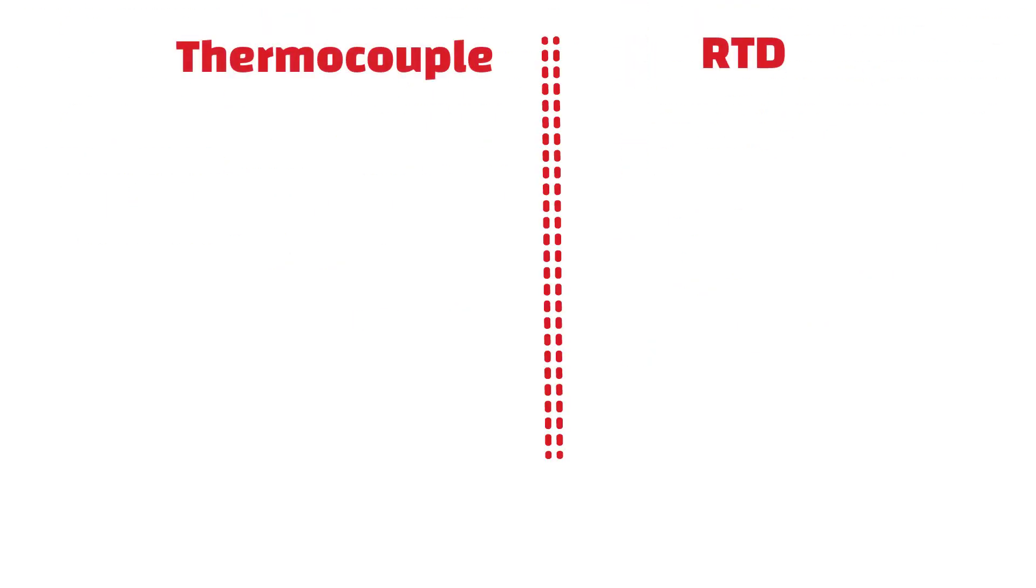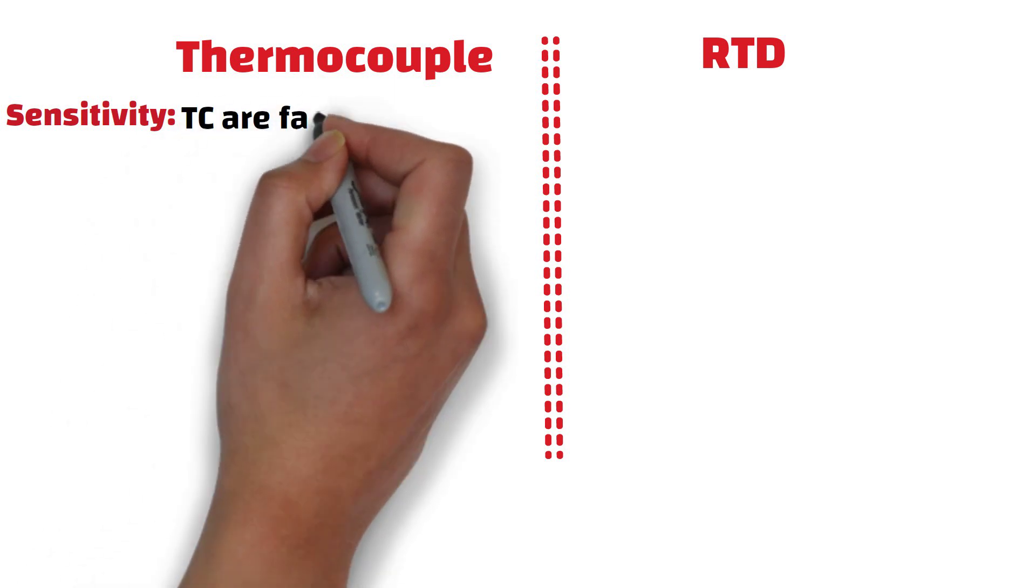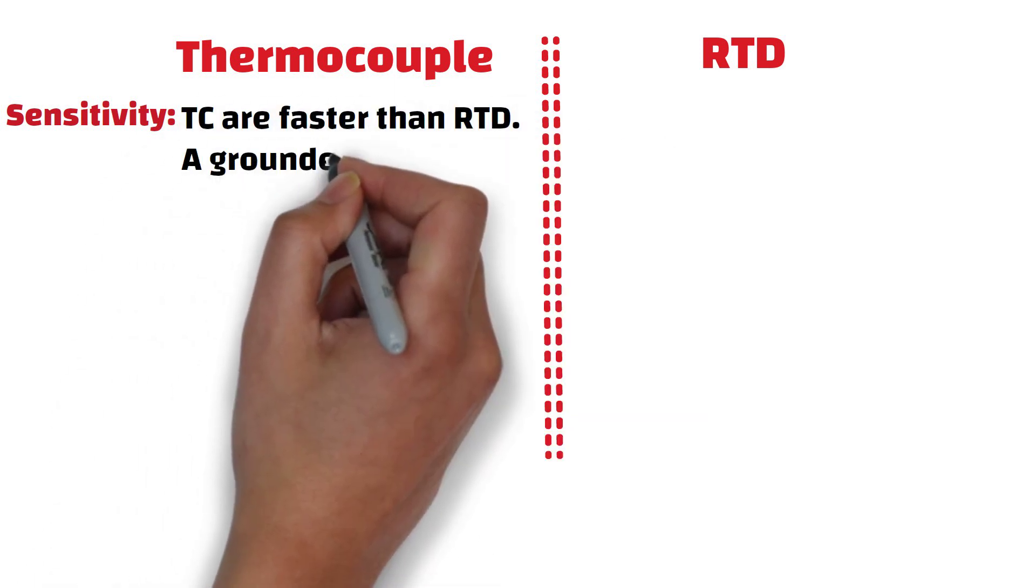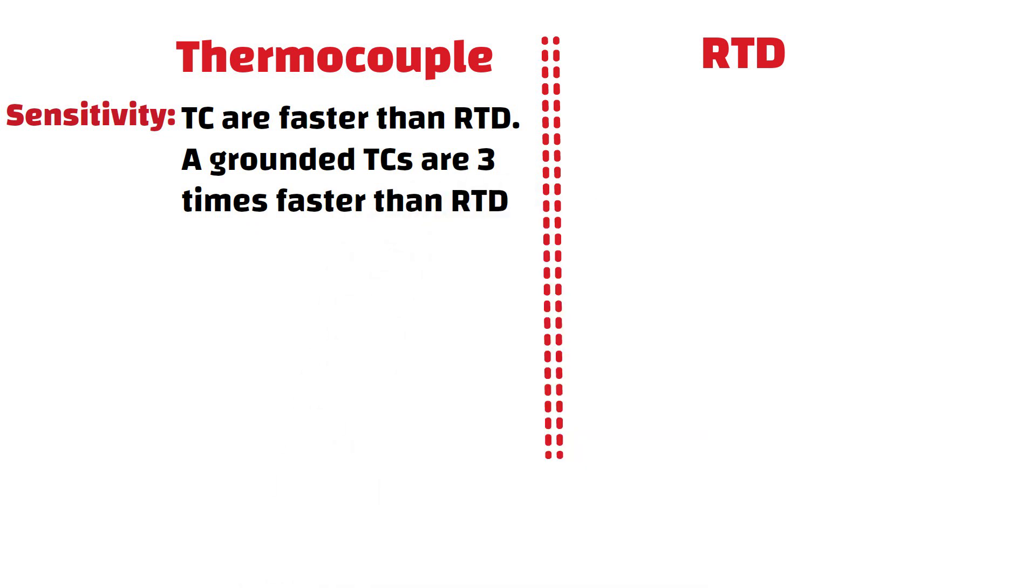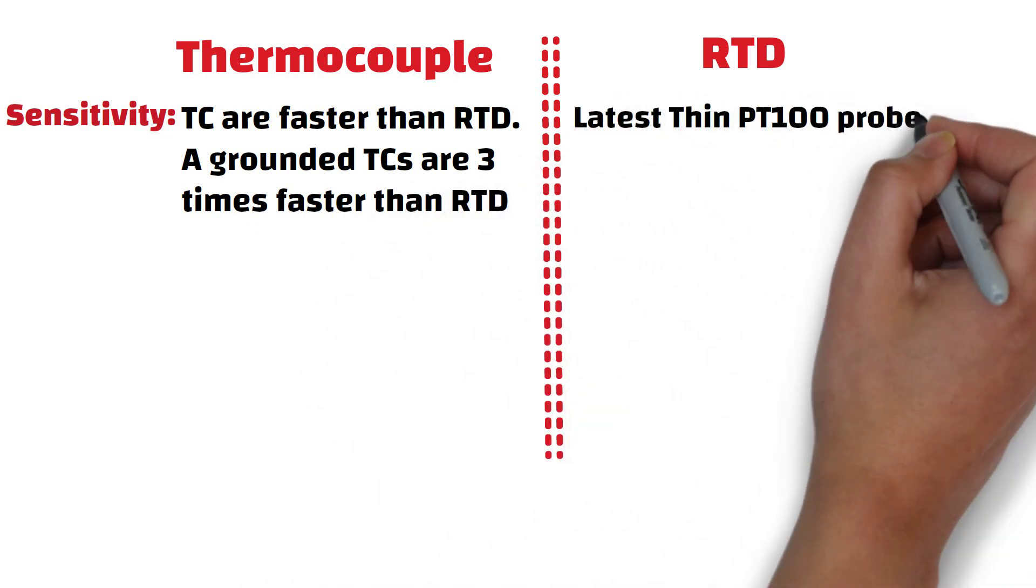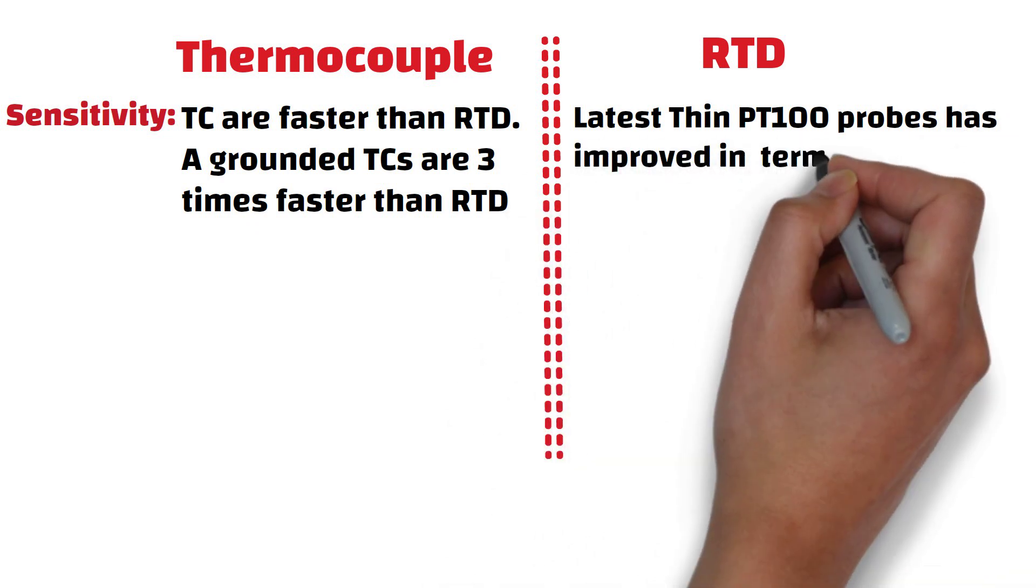In terms of sensitivity, thermocouples are much faster than RTD. For example, a grounded thermocouple are three times faster than RTDs. However, latest thin PT100 probe has improved in terms of response time.